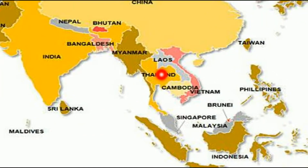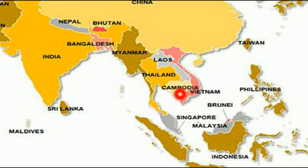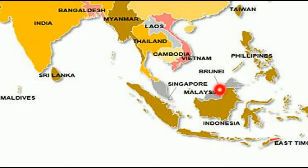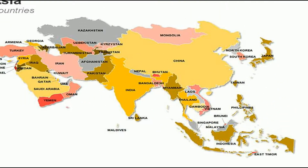Starting with the very first country, we have Thailand. This is India, this is Myanmar, and next to Myanmar we have Thailand. Next to Thailand we have Cambodia. Next to Cambodia we have Vietnam. The fourth country is Singapore — a very small part. The fifth is Malaysia. In the lower part of Malaysia we have Indonesia. The seventh country is Brunei. The eighth is Philippines. The ninth is Taiwan, and the tenth is Maldives. So let's begin with the detailed explanation of all these countries.